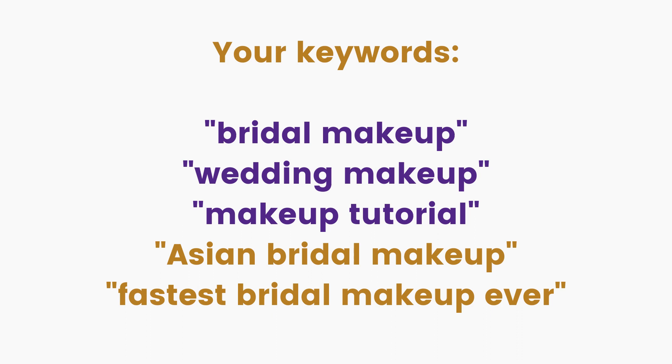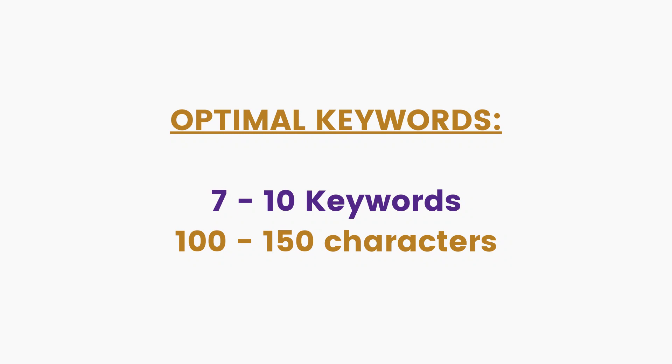So for you, if your channel is a bridal makeup channel, your top videos are probably around 'Asian bridal makeup' or 'fastest bridal makeup ever'. Find those keywords in your analytics and add them to your channel tags. Ideally you should use between seven and ten keywords, or between 100 and 150 characters, and cover as much of your channel as possible without going too far. If you use too many keywords they will become diluted.